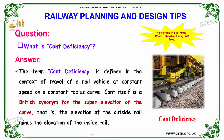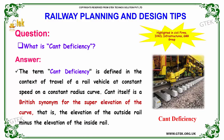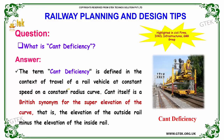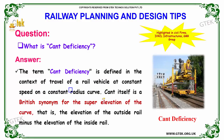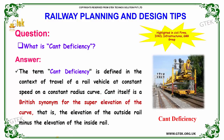The next question: what is cant deficiency? Cant deficiency is defined in the context of travel of a railway at constant speed on a constant radius curve. Cant itself is a British synonym for the super-elevation of the curve — that is, the elevation of the outside rail minus the elevation of the inside rail.